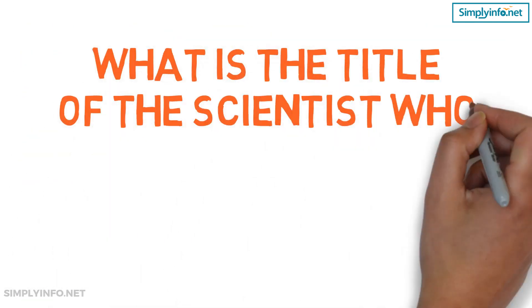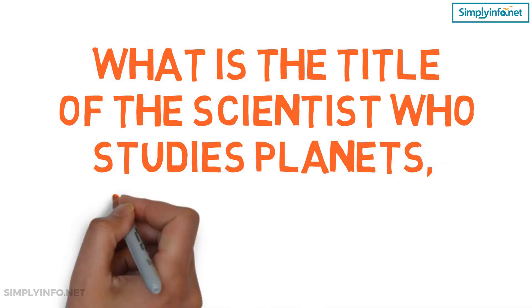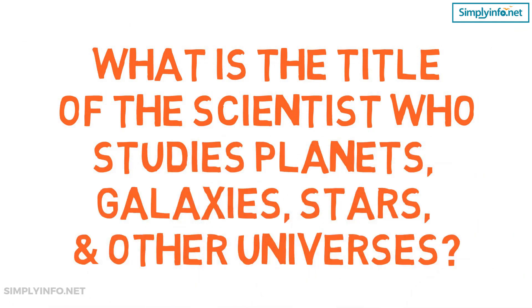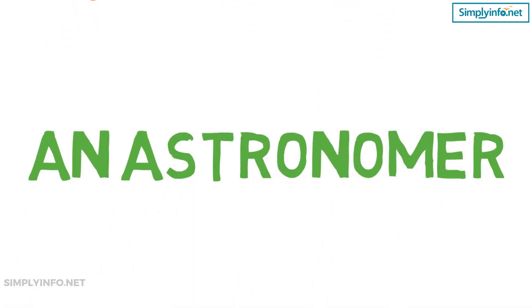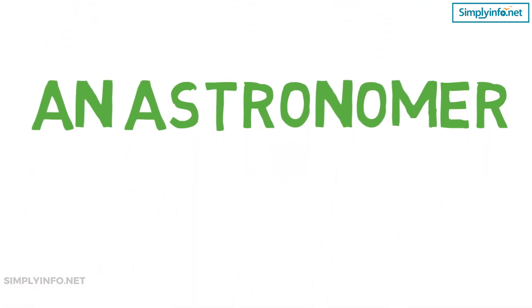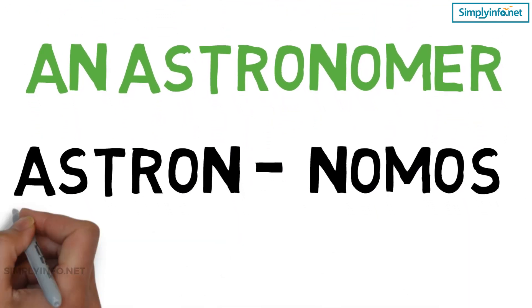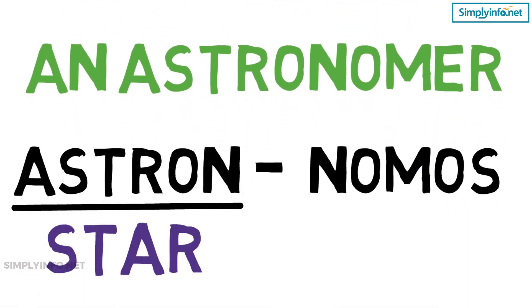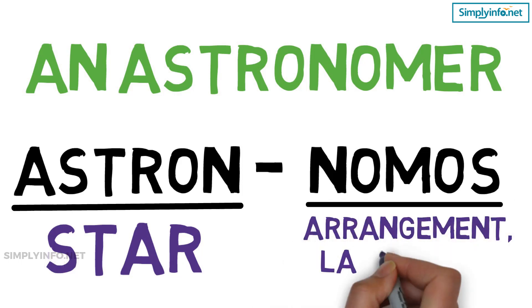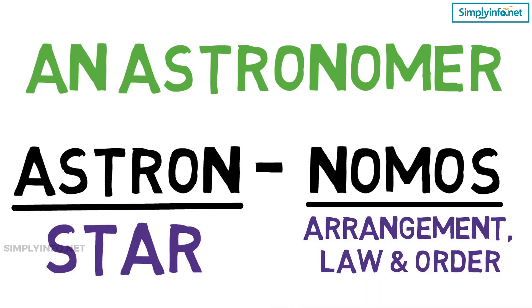What is the title of the scientist who studies planets, galaxies, stars and other universes? An astronomer. Astronomer is built on Greek words: astron, which means star, and nomos, which means arrangement, law and order. The astronomer is interested in the arrangement of stars and other celestial bodies.